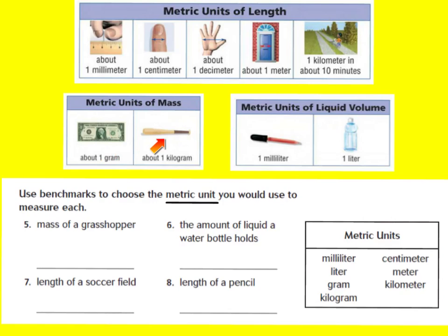Next we're going to talk about the metric system of liquid volume. A milliliter is when you drop it with a medicine dropper. Most medicine droppers have about five or ten milliliters, so it's a very small amount — it takes about five milliliters to fill one up. And last, a liter is just like one of those jugs of juice at the store, like a Gatorade or Juicy Juice container.